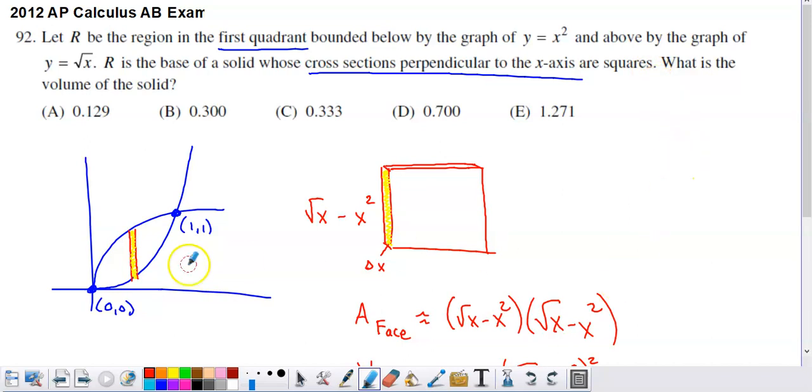Starting with just a sketch of the region R, we have y equals x squared and y equals square root of x. The intersections of those graphs are pretty nice: 0, 0, and 1, 1. You can confirm that either with the calculator or without the calculator.